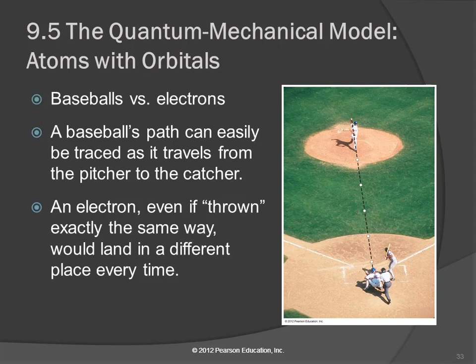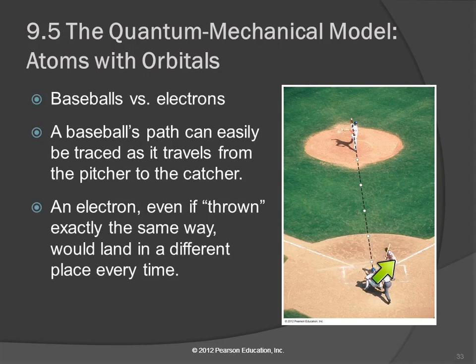So this idea of statistics — comparing baseballs and electrons. A pitcher throws a baseball, and that baseball's path can be traced and predicted as it travels from pitcher to catcher. If the pitcher throws exactly the same way every time, it will go to the same spot every time. Really good pitchers can do that, or think of a pitching machine. But if you were able to do that with electrons — even if you used a machine and shot them exactly the same way — they would land in a different place every time. An electron does not act like a baseball.